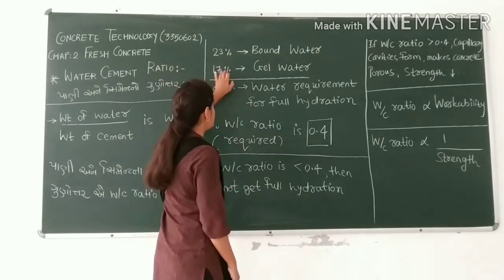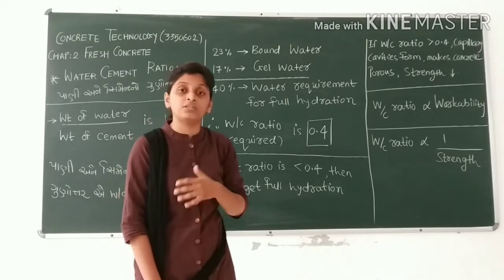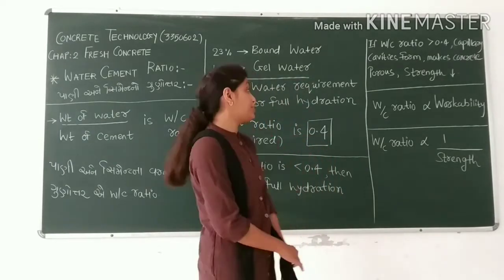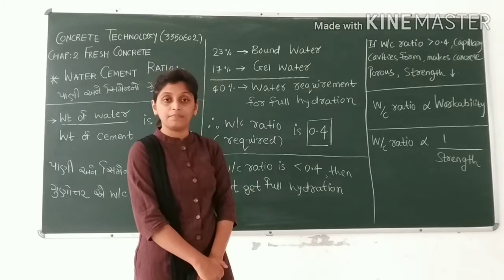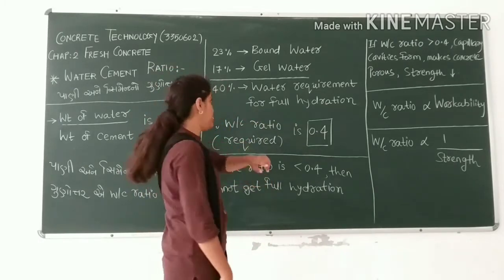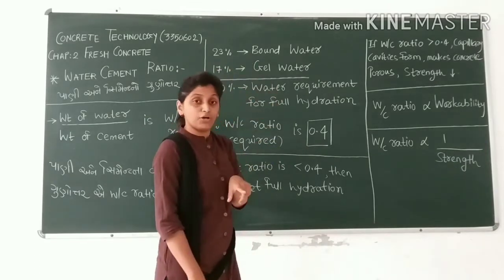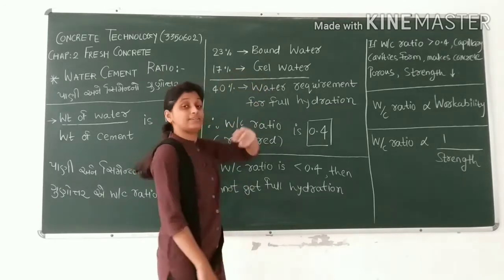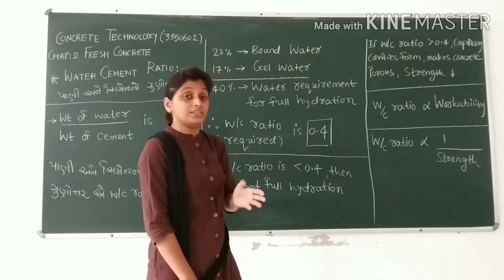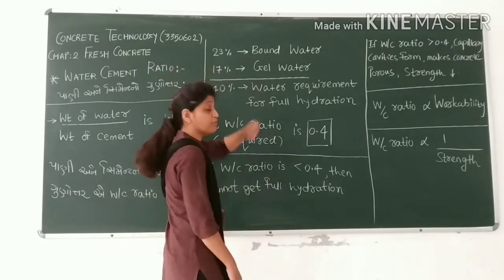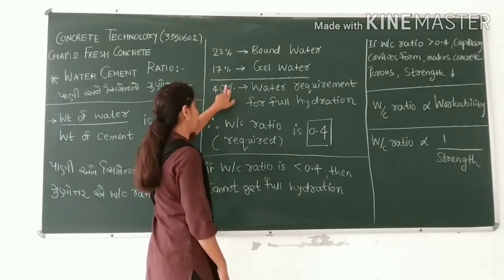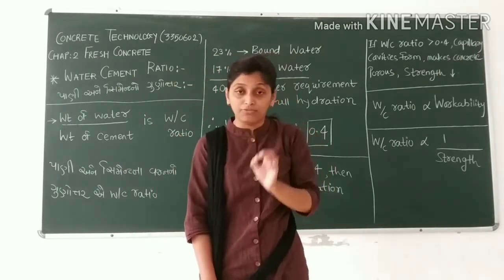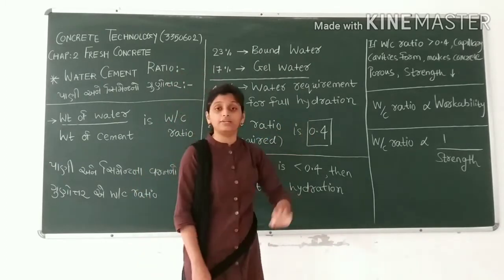If we need to add water by weight of cement for complete hydration, we need to add 40% of water by weight of cement. So the water-cement ratio required for complete hydration is 0.4.